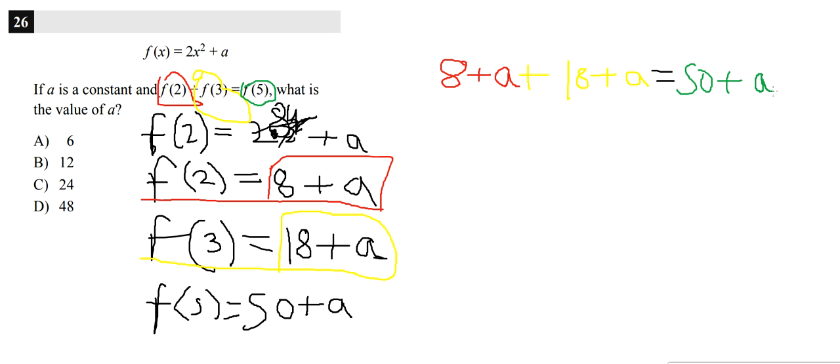So then you basically have to combine these terms. So you know that those are the two terms. So you basically get 2A, because A plus A is 2A. So 2A plus 26 is equal to 50 plus A.